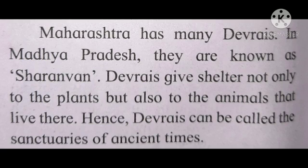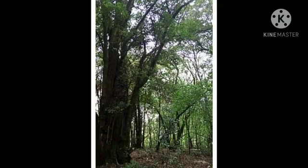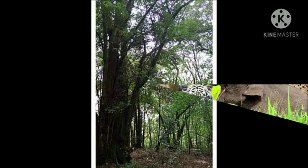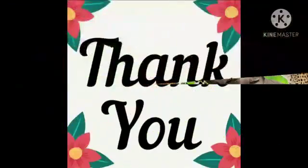Devarais give shelter not only to plants but also to the animals that live there. Hence Devarais can be called the sanctuaries of ancient times. This gives us a very good example of not cutting trees and not harming animals — it looks after the conditions for both plants and animals. This is what we have seen in Lesson 18 about our environment and us. Please read the lesson once. Thank you.